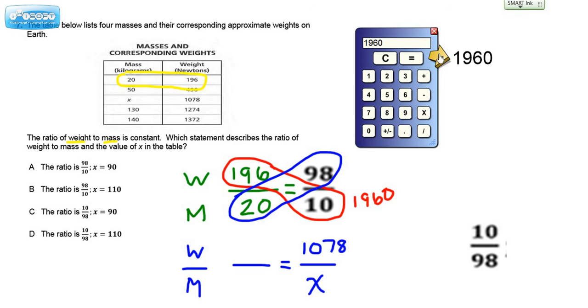Alright, so we have a match. So that means we might reject the 10 over 98 one because 20 times 10 would be 200 and this would certainly not equal 200. So we know that we can eliminate the ones that don't have a 98 to 10 ratio. So this one's off the list and that one's off the list.